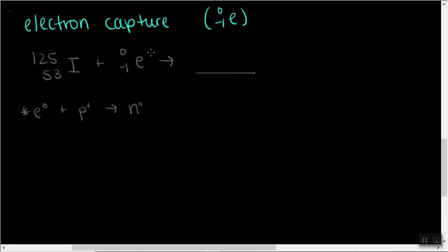So mass doesn't change. We're working with electrons. Mass doesn't change at all. 125 - electrons have basically no mass, it rounds to 0. And then over here, this is very simple. This side has to add up to everything on this side. 53 plus a negative 1 is 52.